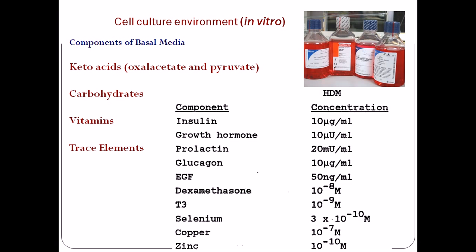The components include ketoacids, carbohydrates, vitamins, and other trace elements. Some supplementary factors are also required alongside bovine serum or fetal calf serum, such as insulin, growth hormone, prolactin, glucagon, and EGF. Ketoacids — for example oxaloacetate and pyruvate, which are intermediates in glycolysis and the Krebs cycle — are added to the media as an additional energy source alongside carbohydrates and help maintain maximum cell metabolism.